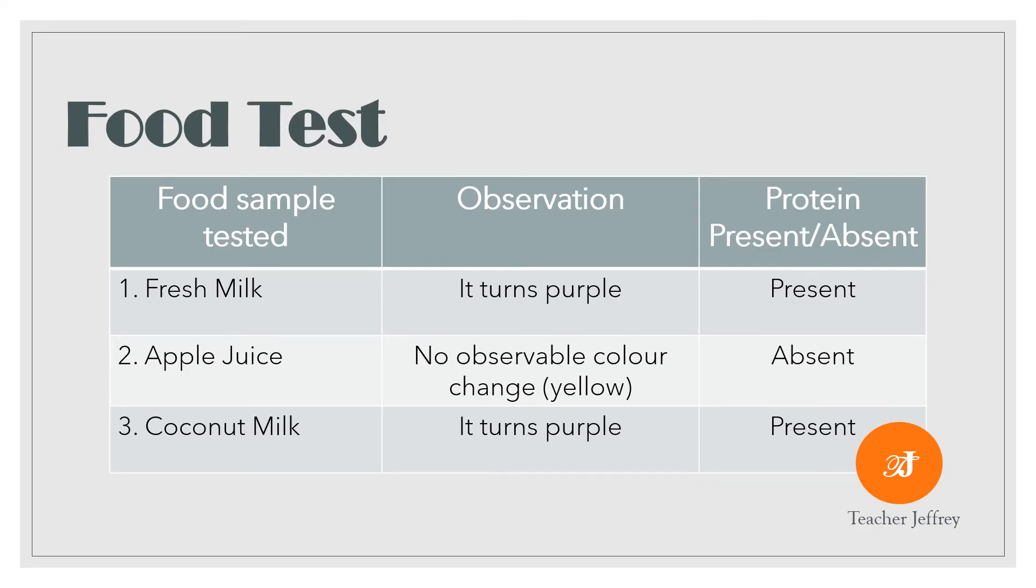Here is our observation and interpretation about the food samples tested in Biuret reagent for the presence of protein. Fresh milk turns purple, therefore protein is present. In apple juice, no observable color change, therefore protein is absent. For coconut milk, it turns purple, so protein is present.